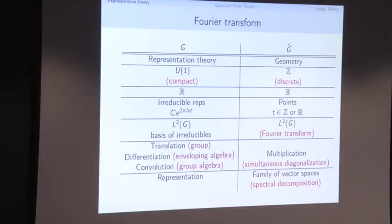Finally, given any representation of the group, we spread it out as a family of vector spaces — perhaps a sheaf, vector bundle, or projection-valued measure depending on your exact setting — as a family of vector spaces over the dual. This is an extremely successful, essentially complete solution for representation theory of locally compact abelian groups, and this will be the model for how we want to understand representations of non-abelian groups.